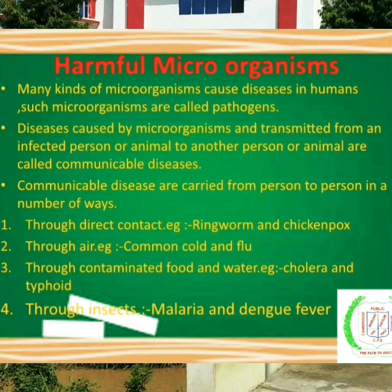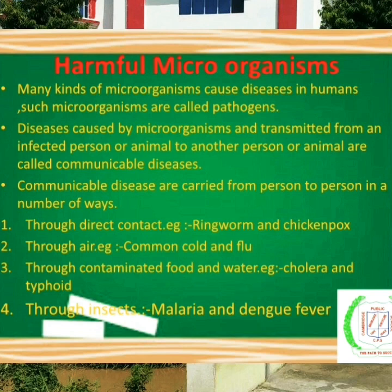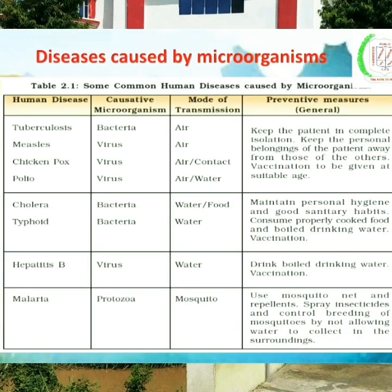Harmful microorganisms — many kinds of microorganisms cause diseases in humans. Such microorganisms are called pathogens. Diseases caused by microorganisms and transmitted from an infected person or animal to another are called communicable diseases. They spread through direct contact, through air, through contaminated food and water, and through insects like malaria and dengue fever. Here are some human diseases: tuberculosis, measles, chicken pox, polio, cholera, typhoid, hepatitis B, malaria. The table shows how each is spread and preventive measures. For example, tuberculosis is caused by bacteria, mode of transmission is air, and prevention includes keeping the patient in complete isolation.